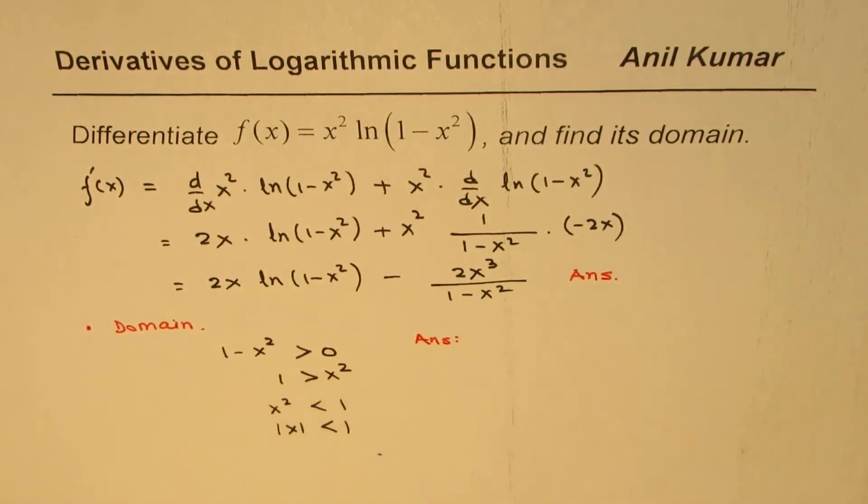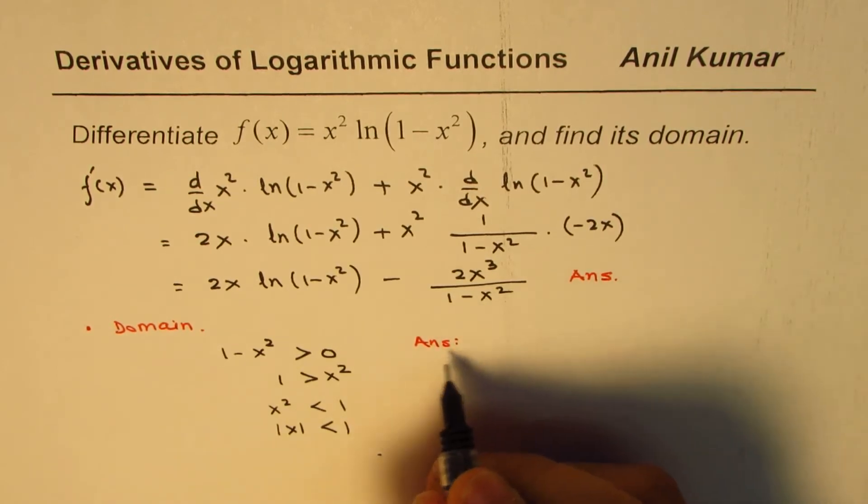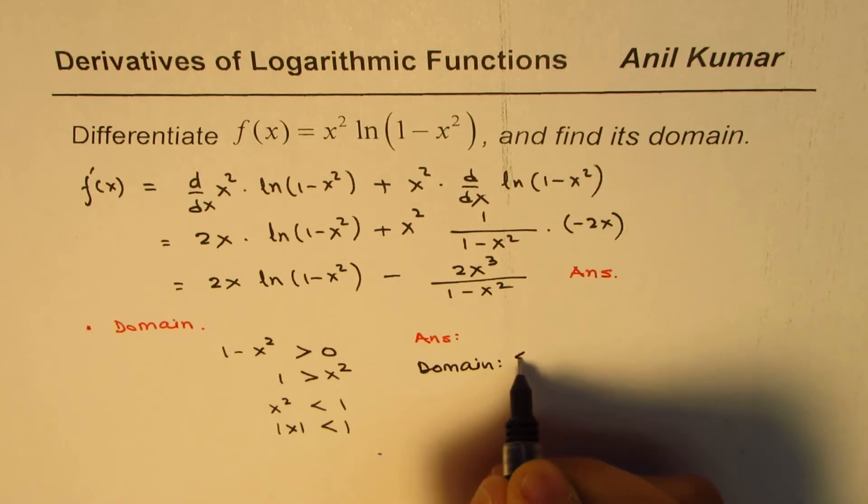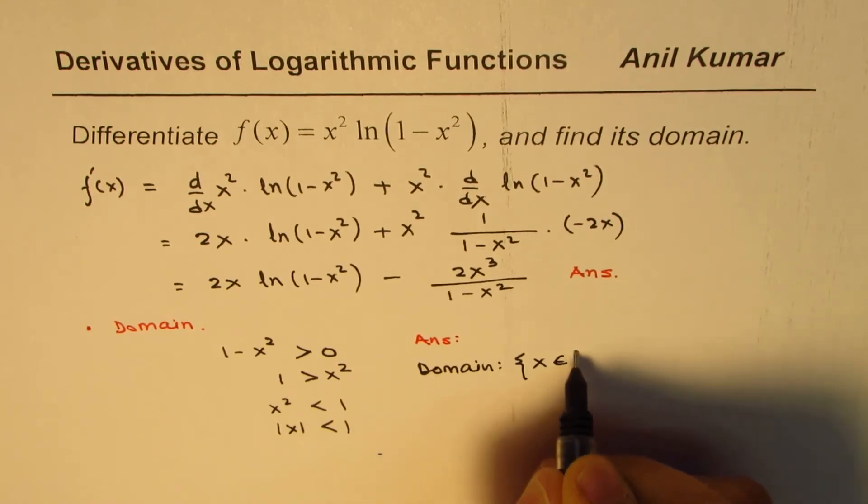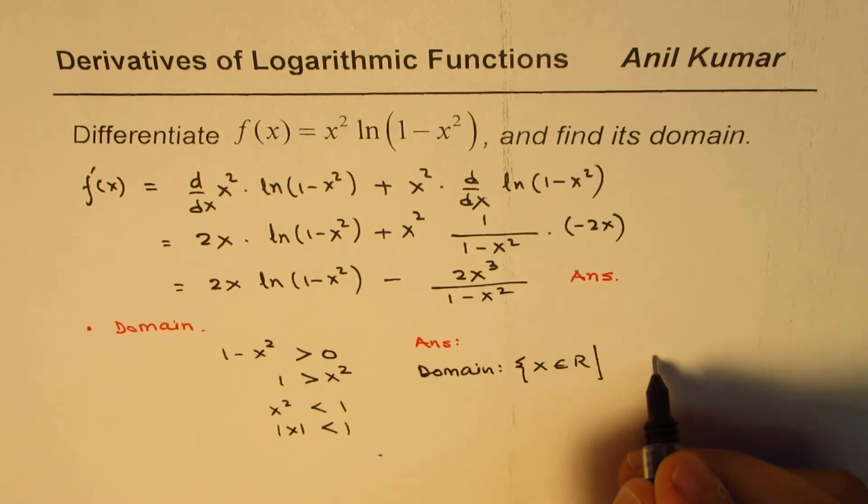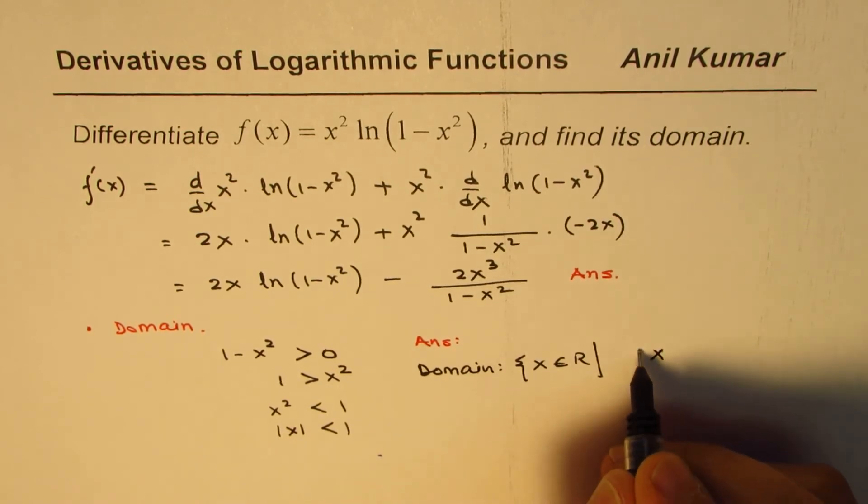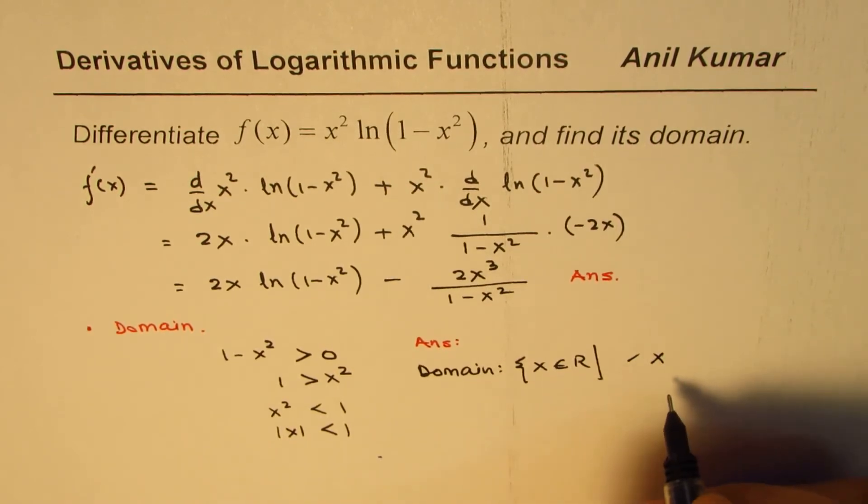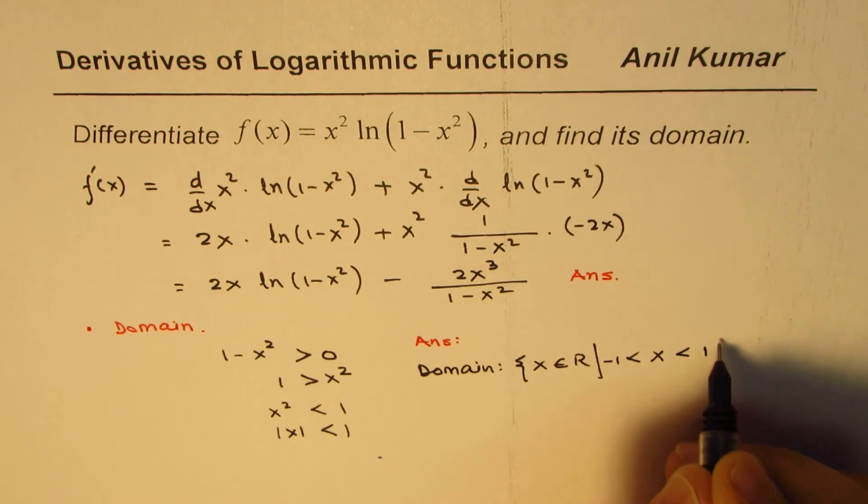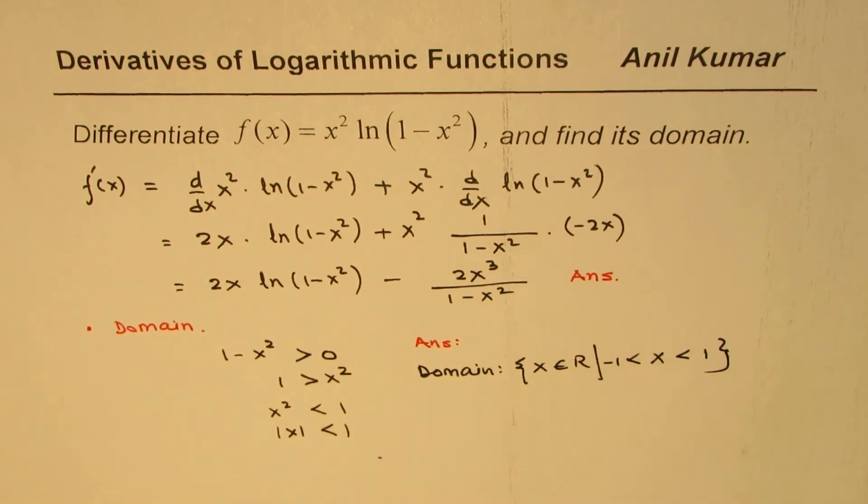So the answer for domain is that x belongs to real numbers, where absolute x is less than 1. Or you can say x is greater than minus 1 and it is less than 1. So you could write like this. So that becomes the domain, or you could use absolute x less than 1, either way.